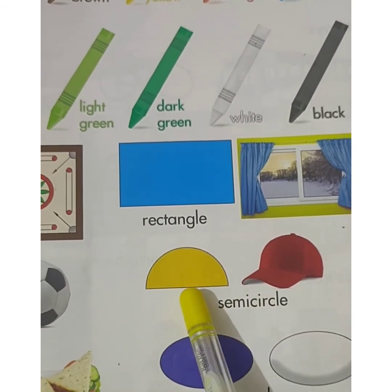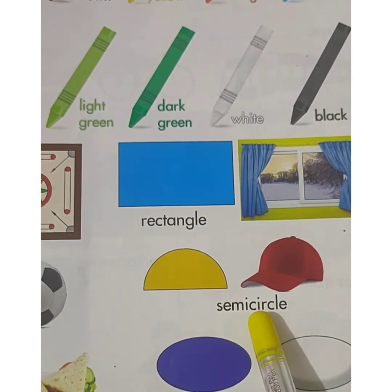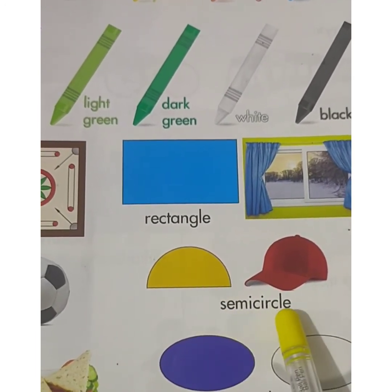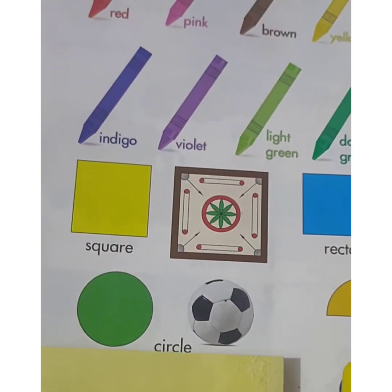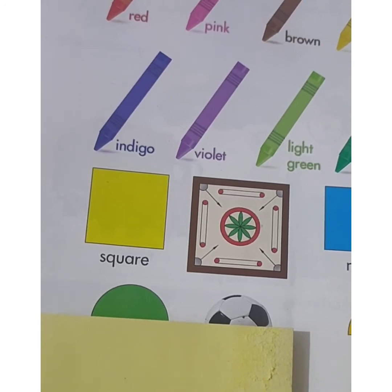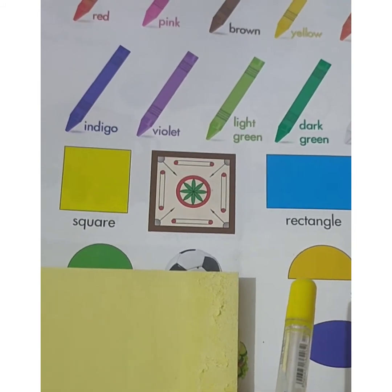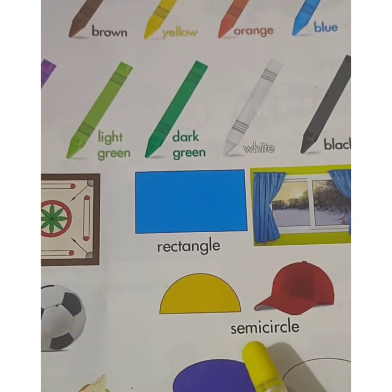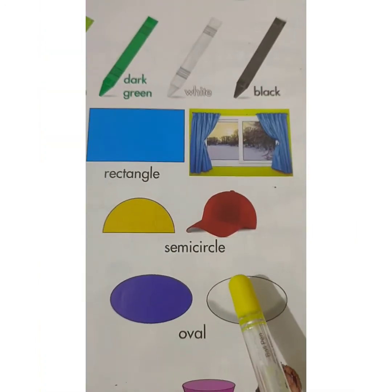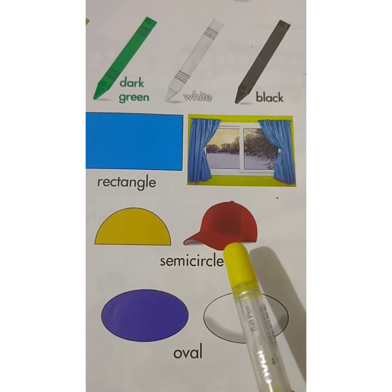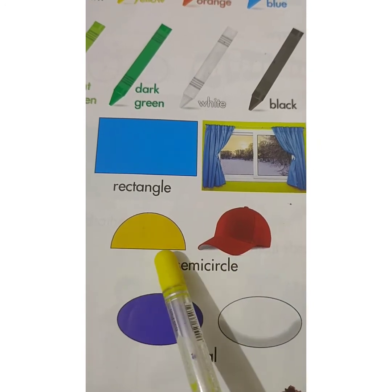This is semicircle. S-E-M-I-C-I-R-C-L-E. Semicircle. You see children, if I remove the half of the circle, it will become a semicircle. So this is a half circle or semicircle. This is a cap and the shape of this cap is similar to semicircle.